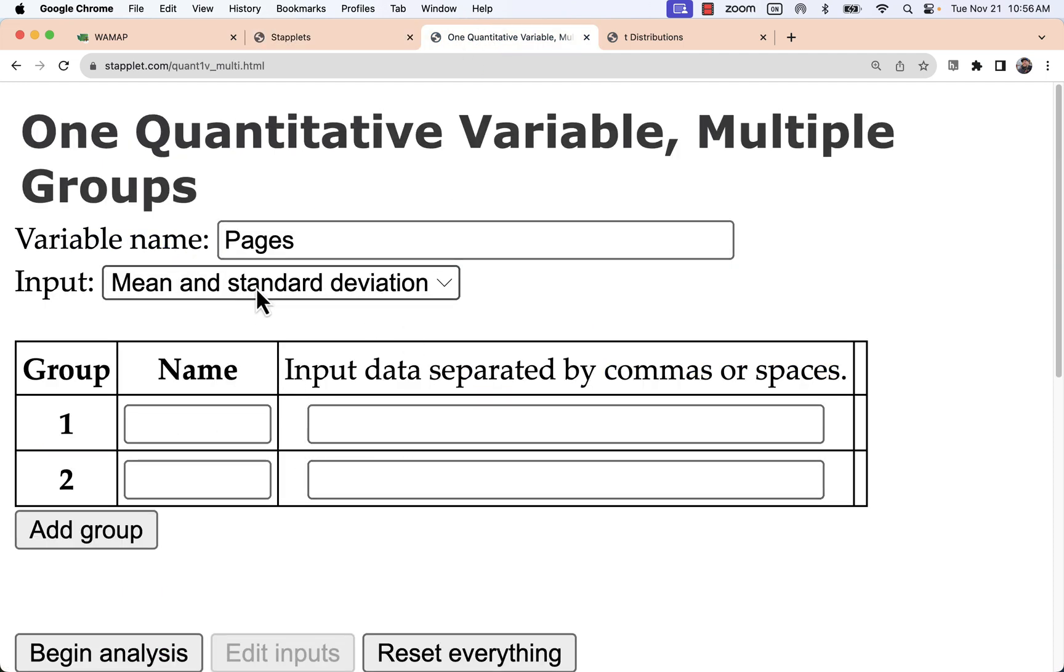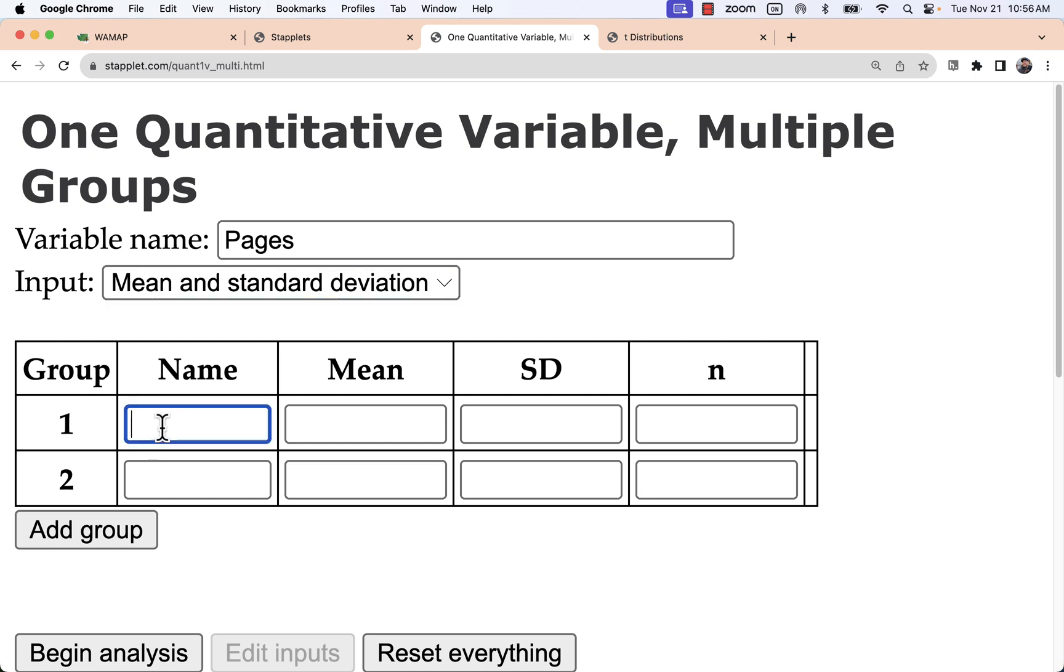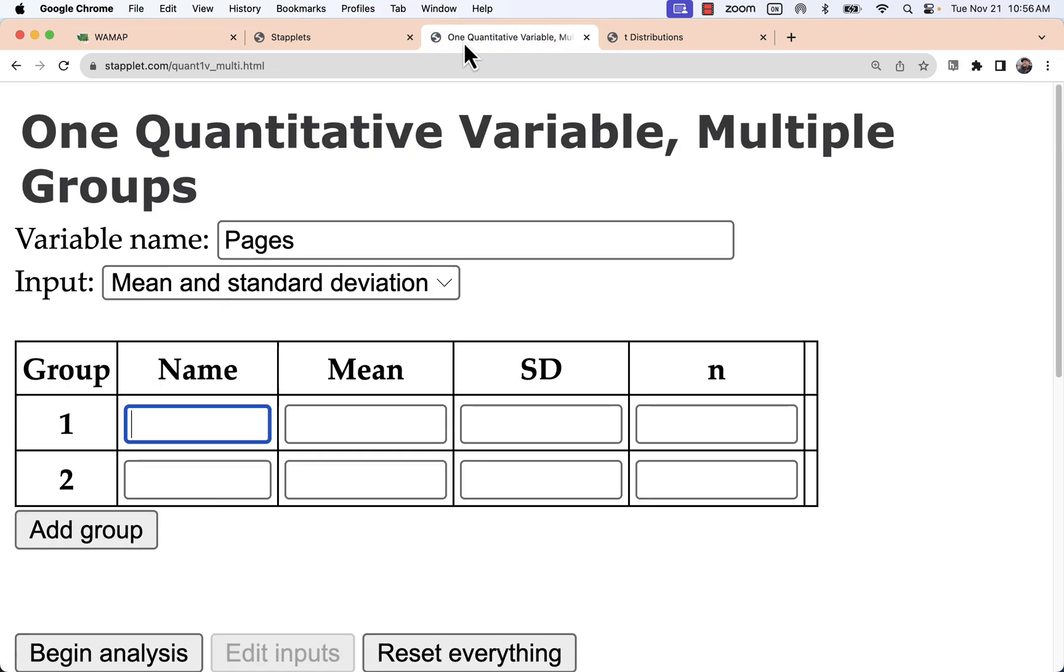Here we have the option to enter that. Typically the default is raw data where we would have a bunch of measurements. In this case, it would be a number of pages for a bunch of assignments. We actually have the mean and standard deviations summarized here. So you can call this population one and two, or you can be more specific. With this problem, we do know that population one is political science and two is history. So I'm just going to put that clearly. And then I'll go ahead and just enter the summary statistics, mean, standard deviation, and sample size.